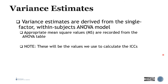These variance estimates are derived from the single-factor within-subjects ANOVA model — similar to the one-way ANOVA. The appropriate mean square values are recorded from the ANOVA table and used to calculate the ICC, the intraclass correlation coefficient.